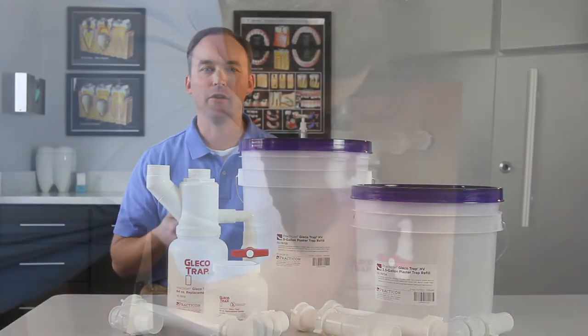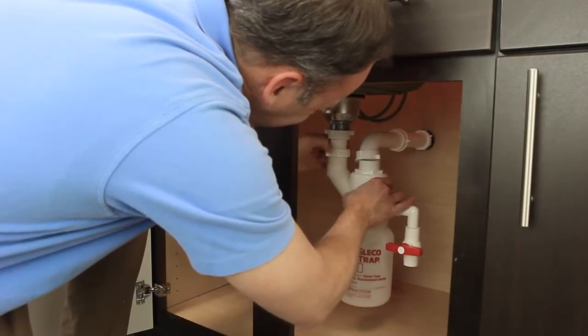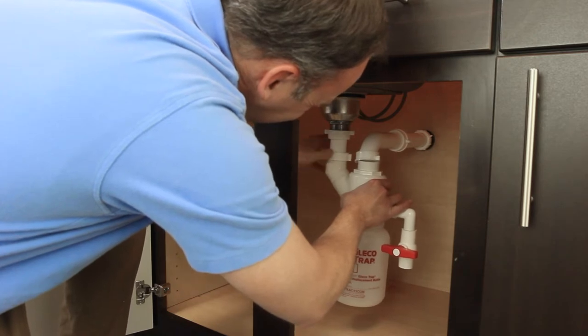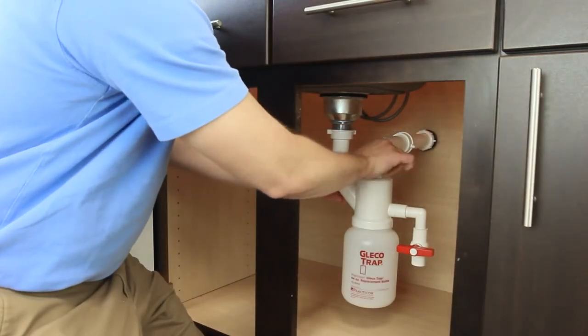First, disconnect and remove your current sink trap. Next, connect the sink drain to the 45 going into the GlecoTrap, and connect the wall drain to the top of the GlecoTrap.